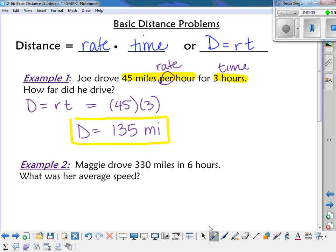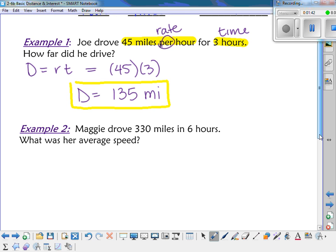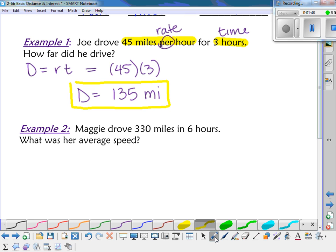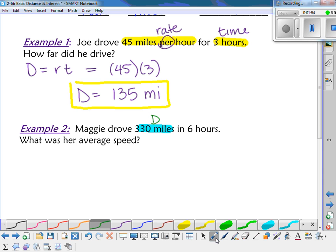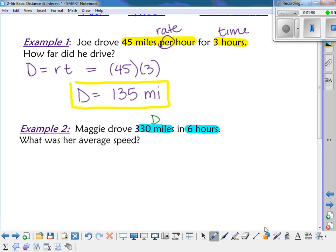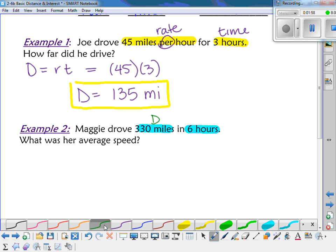Any questions on that? Those are the easiest ones to do. When they give you the rate and the time, you're just multiplying them. But sometimes they're going to give you different information, like example two. Now they told me she drove 330 miles in six hours. So they gave me 330 miles. What does that represent? The distance. That's D. And six hours is the time.